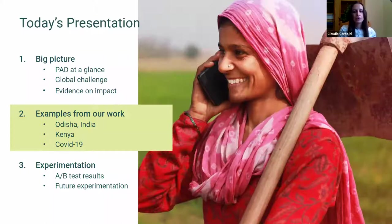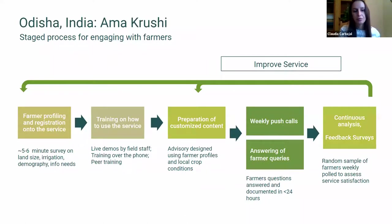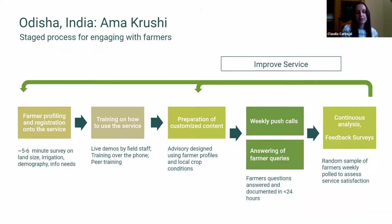Now I'll talk about some of our projects from different countries reflecting different implementation strategies. I'll start with Odisha, India — our biggest program, reaching more than 1.1 million farmers. The service engages farmers at different stages: farmers are called by the call center to collect profiling information used to customize message content. Content is prepared by our agronomy team in coordination with partners and reviewed by a content review meeting with government experts and research organizations.